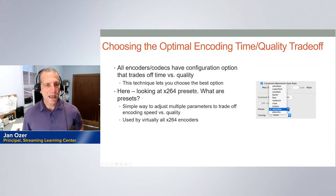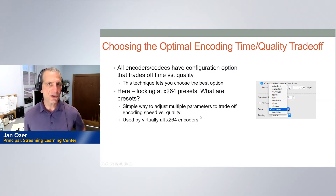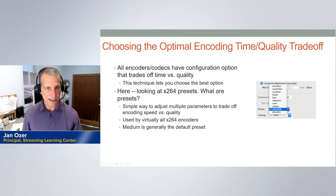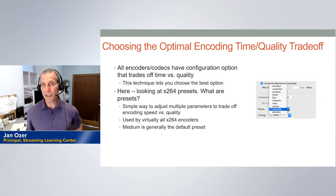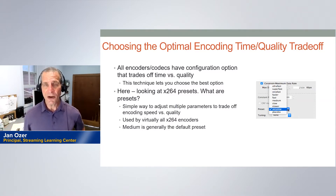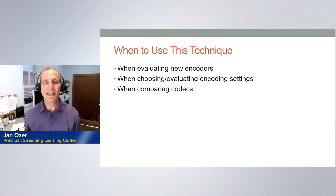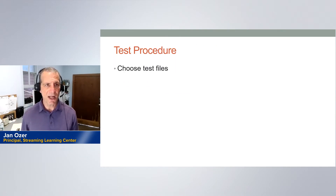So what are presets? Presets are simple ways to adjust multiple parameters to trade off encoding speed versus quality. If you have an x.264 encoder — whether ffmpeg or many cloud encoders — you'll have access to these parameters. Medium is generally the default preset, but is it the right quality/encoding-time trade-off? I apply this kind of analysis anytime I look at a new encoder or codec.